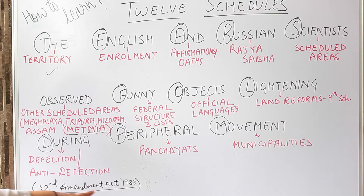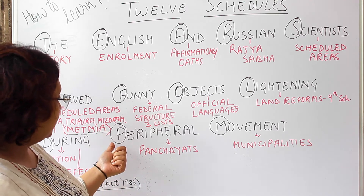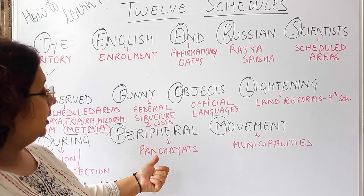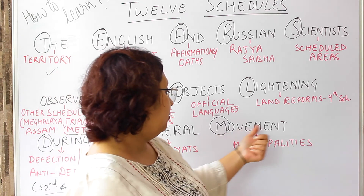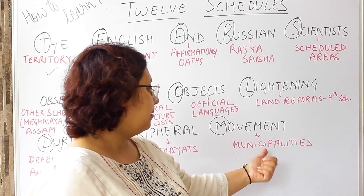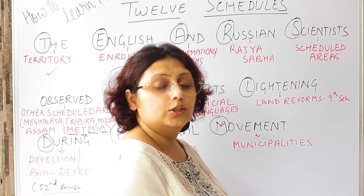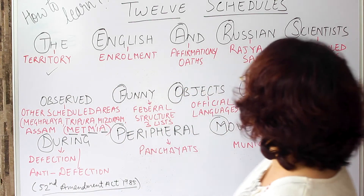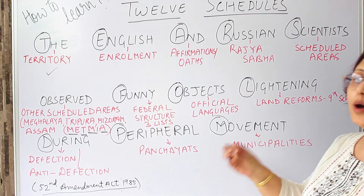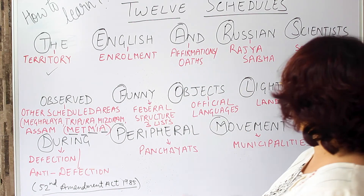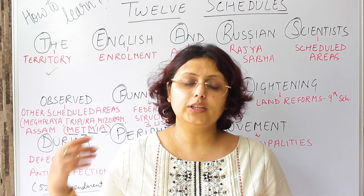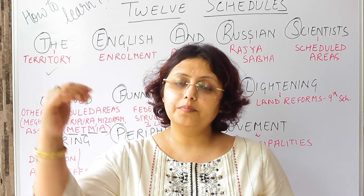Then we have P from 'Peripheral' — P stands for Panchayats, the 11th schedule. And finally M from 'Movement' — M stands for Municipalities, the 12th schedule. So you just have to learn: 'The English and Russian scientists observed funny objects lightning during peripheral movement' — and all 12 schedules are set in sequence.